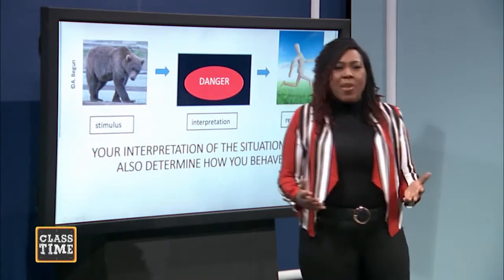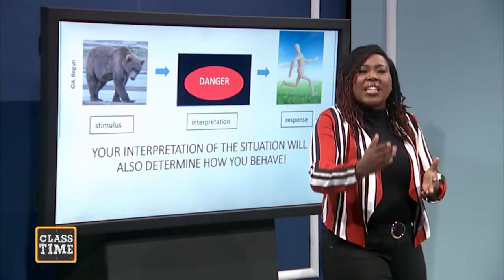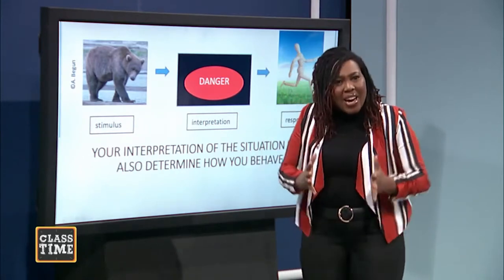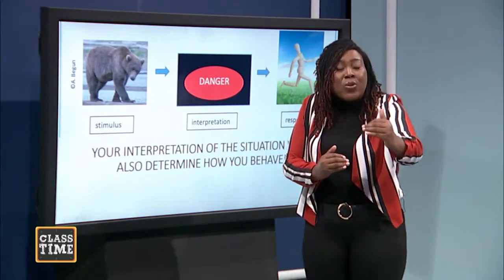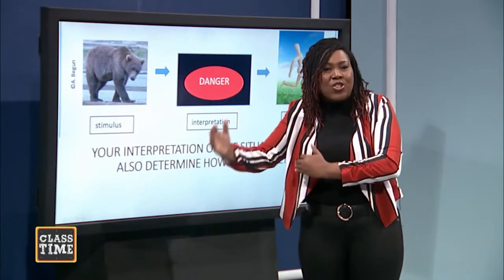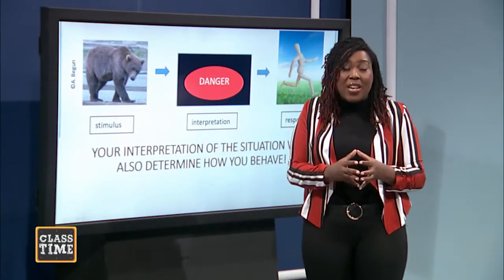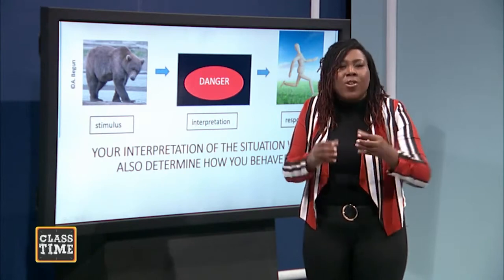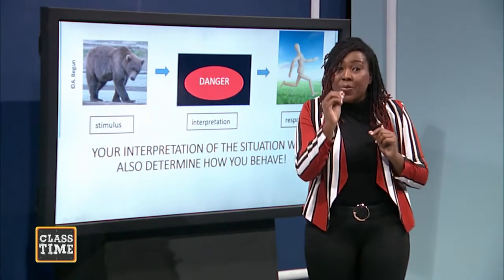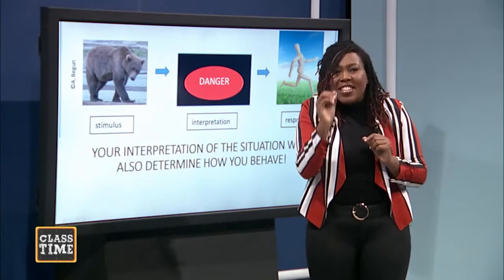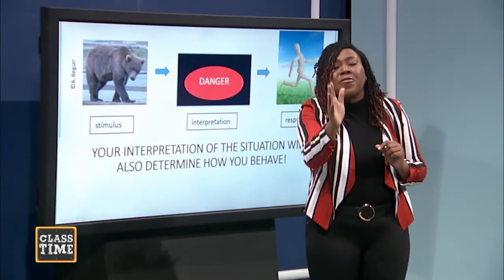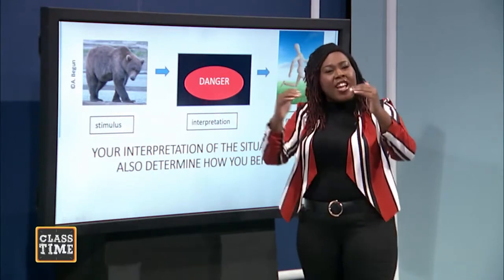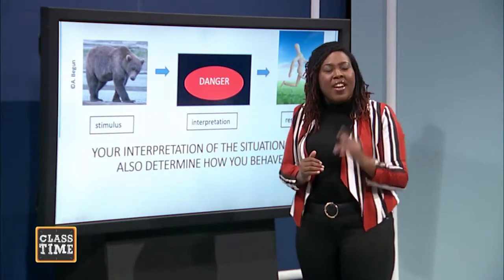Not only do you now understand the functionalists, the Marxists, and the interactionists, but if a question is posed you should be able to compare and contrast — because now you know the difference between macro and micro, who is macro and who is micro, and how they see society. If you think hard about it, you can speak about how the functionalists and the Marxists see change versus the interactionists. Just having an understanding of the perspectives is 50% of the mark.